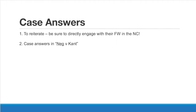The next section covers case answers. As I stated with the util framework, you should directly engage with their framework in your first speech and answer those arguments. Then on their contention offense, you need a reason to prefer your framework or a reason why abolishing plea bargaining upholds their framework. The neg v cont file has answers interacting with their contentions — for example, saying why plea bargaining isn't structurally coercive as they claim, or why having plea bargaining enables more choice for individuals in the criminal justice system.